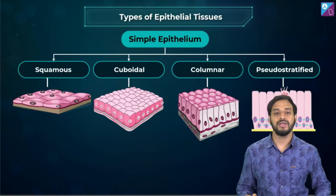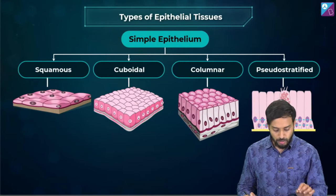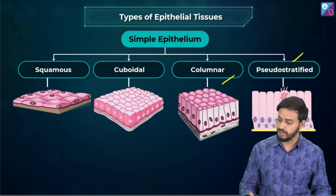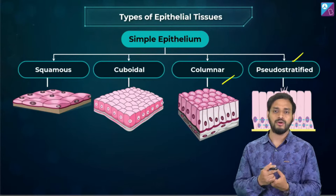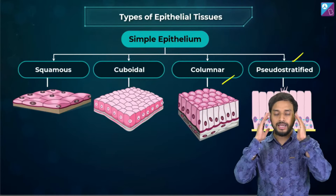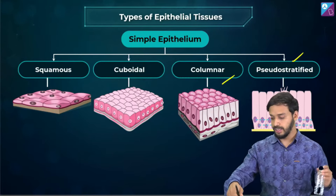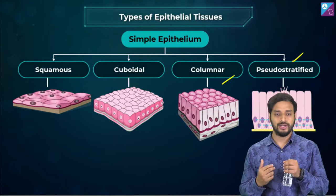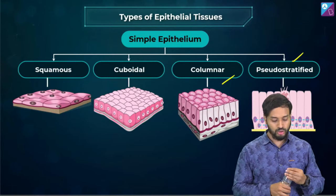In simple epithelium, there are four types: squamous, cuboidal, columnar, and pseudo-stratified. Compound epithelium is present in the skin for protection. Take a look at the picture — it is very helpful to relate the diagrams so you can quickly recall during your examination.